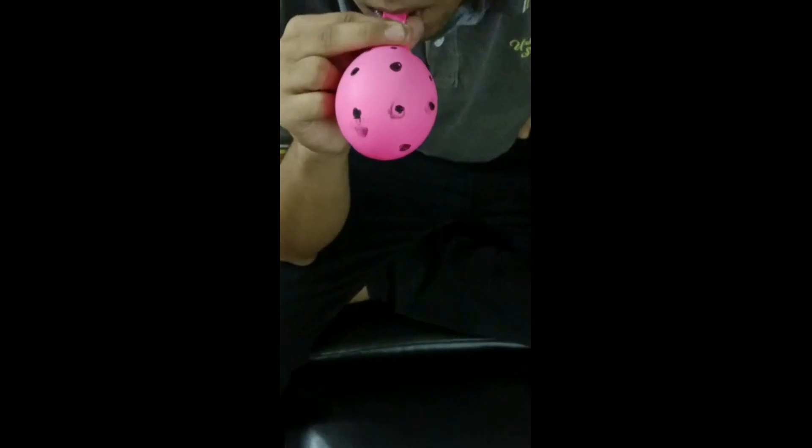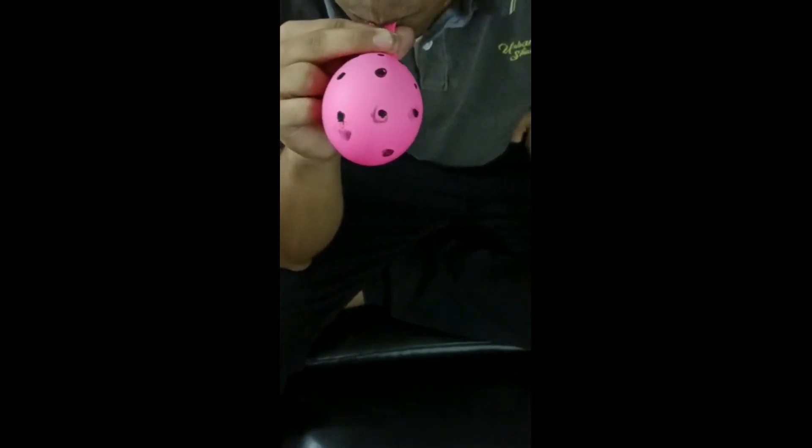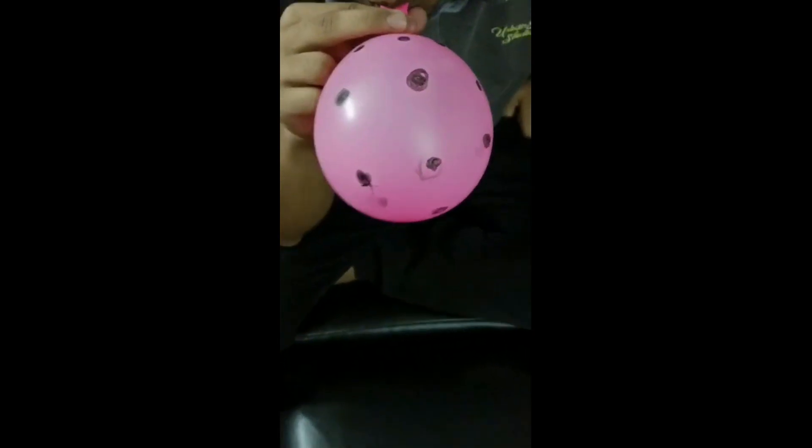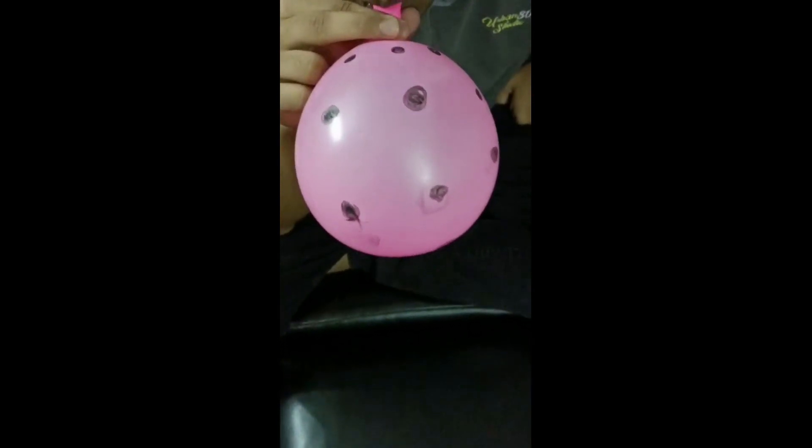The best analogy to describe what happened would be to use a balloon with tiny dots on it which is being filled with air. The dots on the balloon represent galaxies. The balloon itself represents the universe.